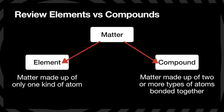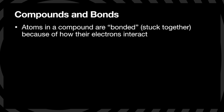Along with that, I want you to think back to when we talked about the difference between elements and compounds. An element is matter that's made up of one kind of atom. So if we have a chunk of gold, that's an element because it's made up of purely gold atoms. But a compound is matter that's made up of two or more elements bonded together. Specifically, those atoms in a compound are bonded because of how the electrons — specifically the electrons on the outside — interact with each other.